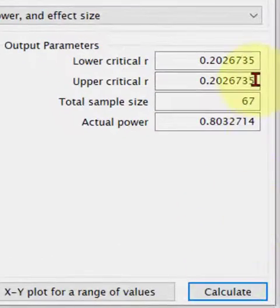Calculate. Boom. So 67 people. You need a minimum of 67 people to run a Pearson's correlation. MGZ out.